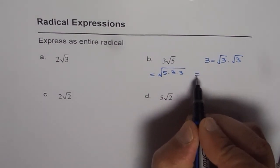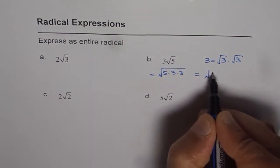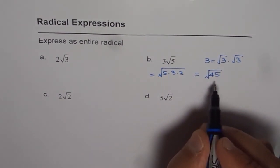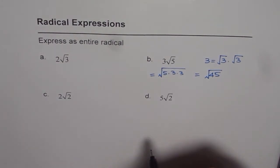And now this gives us the result. 5 times 9 is 45. So square root of 45 is equivalent radical for the mixed radical given here. Correct? So that is how you write an entire radical.